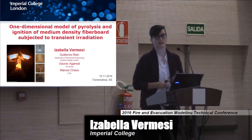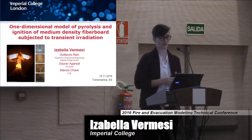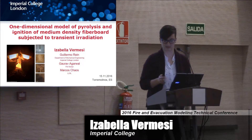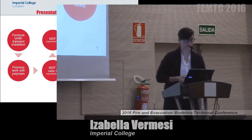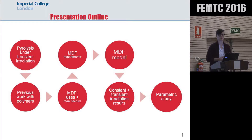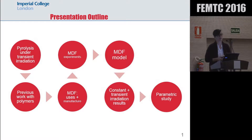So I'm going to go a bit more back to the fundamentals. I'm talking about pyrolysis under transient irradiation today, so not really case study worthy. First off, I'm going to start by defining pyrolysis and transient irradiation as well, and why it is interesting to work with. Then I'm going to show the basis of our work — we started off using polymers, PMMA to be more precise, and then after being happy with what we got there, we moved on to MDF, which is more relevant and more used in the built environment compared to PMMA.